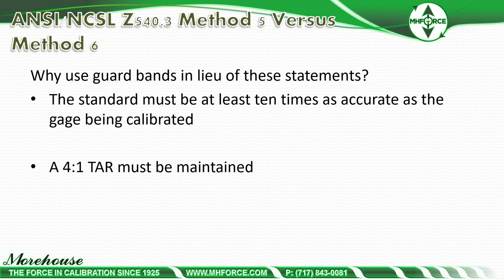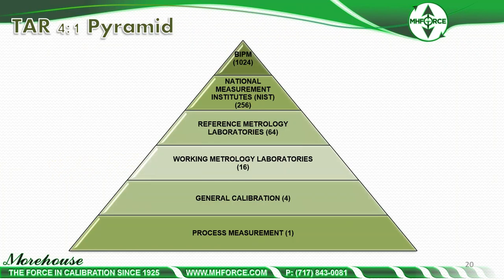Why use guard bands instead of common statements like 'the standard must be 10 times as accurate' or 'maintain a 4-to-1 TAR'? TAR — test accuracy ratio — means if you have a 0.1% device, you need a reference known to better than 0.025%. It doesn't account for adapters or other physical components. Starting at a 4-to-1 ratio for process measurement, working metrology labs need 6 times greater, reference labs like Morehouse need 64 times greater, NIST needs 256 times greater, and BIPM needs 1,024 times greater. It is impossible to maintain TAR ratios throughout metrological traceability.